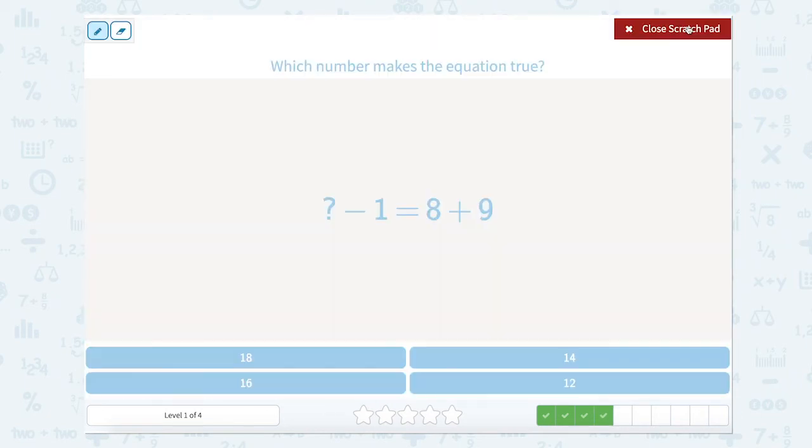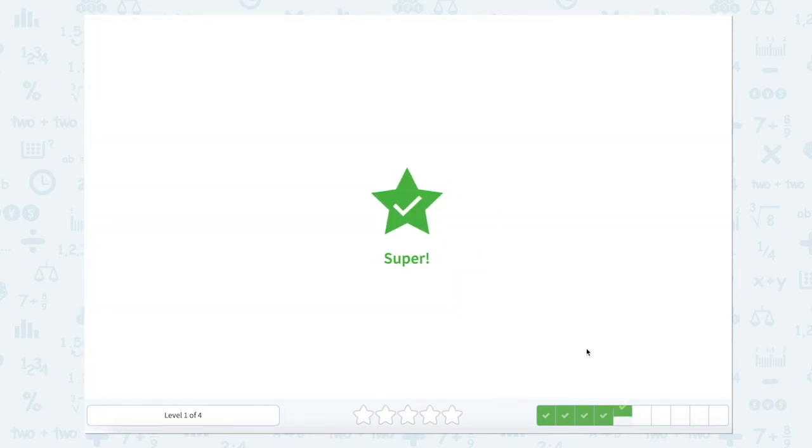Here's our next equation. We have something minus 1 equals 8 plus 9. Well, 8 plus 9 equals 17. So something minus 1 equals 17. I can add that 1 to 17 to figure that out. So 1 plus 17 is 18. So 18 minus 1 should equal 17. Let's see if 18 is one of our answer choices. It is.